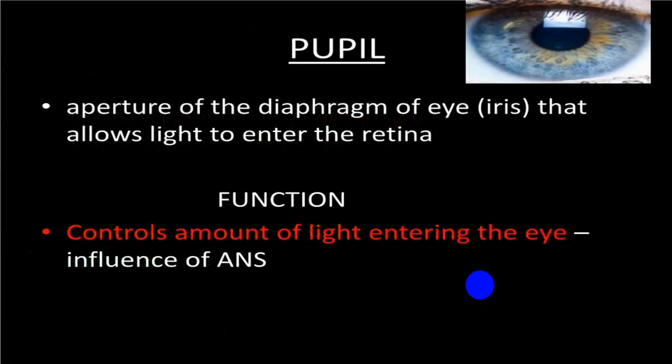The pupil is an aperture of the diaphragm of the eye — that is, the iris — that allows light to enter the eyeball and fall on the retina. Pupil size increases and decreases because of two types of fibers: circular fibers supplied by parasympathetic fibers from the Edinger-Westphal nucleus of the third cranial nerve, and perpendicular (dilator) fibers supplied by sympathetic fibers.